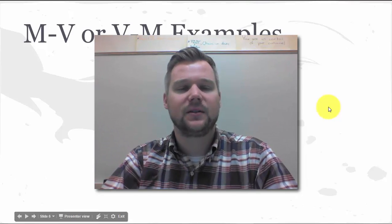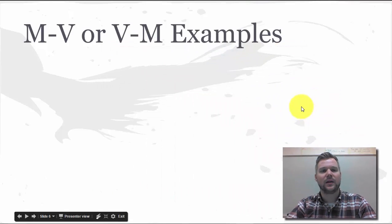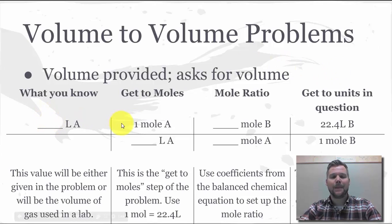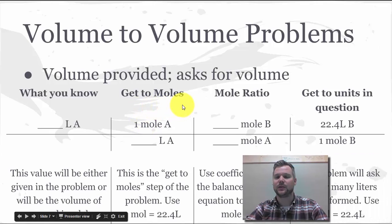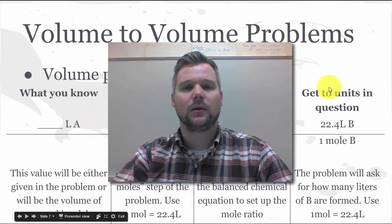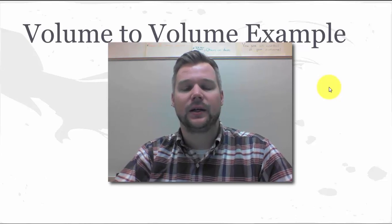Let's move on to a volume-to-volume problem. These ones are very quick because we don't need to use the periodic table to look up any numbers. We're still going to start out with what we know in the top left box. Our mole conversion is going to be going from 22.4 liters to 1 mole. That's always our first step — moles is the goal. Then we stack our moles using the coefficients, going from moles of A to moles of B, and finish by getting back into liters at 22.4 liters. Here is a volume-to-volume example problem.